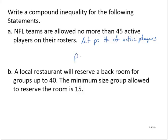So P is less than or equal to 45. But reasonably, the number of players is going to be greater than or equal to 0. So here is a compound inequality that represents that statement, and I would read that from left to right as 0 is less than or equal to P is less than or equal to 45.